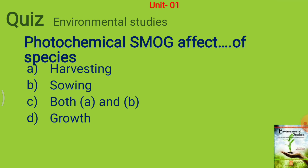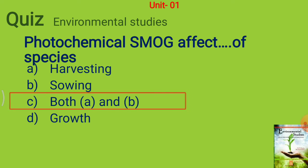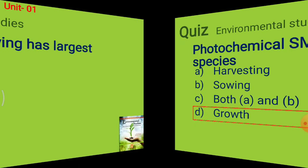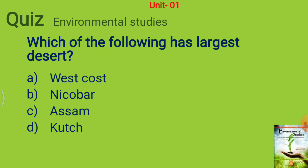Photochemical smog affects dash dash dash of species — options are harvesting, showing, both A and B, or growth. The answer is growth. Next question: which of the following has the largest desert?